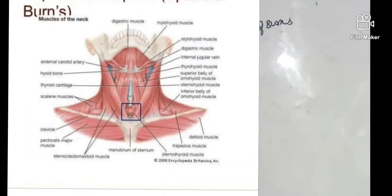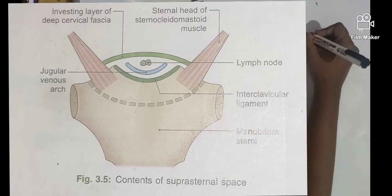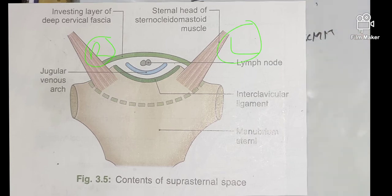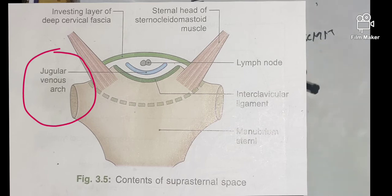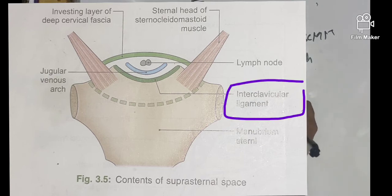It encloses the sternal heads of right and left sternocleidomastoid muscle, jugular venous arch, a lymph node, and the interclavicular ligament.